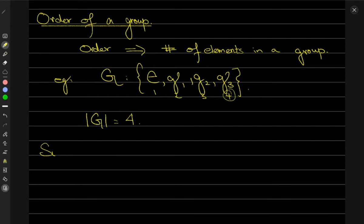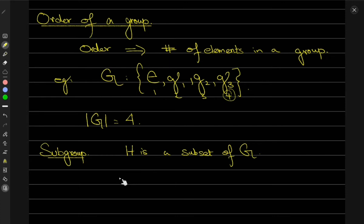Another thing is the subgroup. You may remember I said that the Rubik's Cube group is essentially a subgroup of the larger permutation group. A subgroup comes from the idea of a subset: suppose H is a subset of a group G. If H is itself a group with the same operation as G, then H is a subgroup of G.